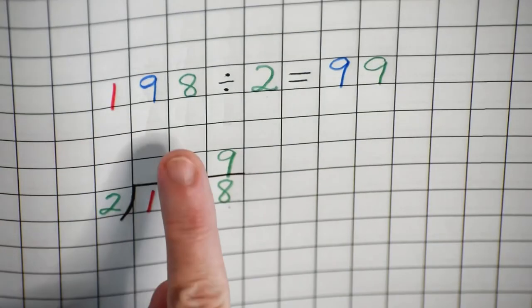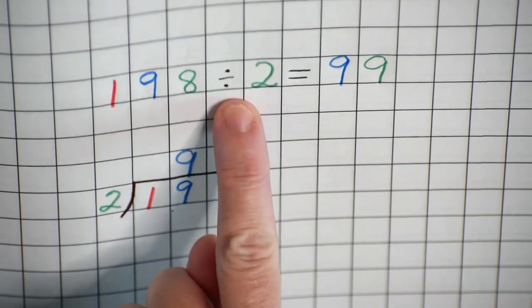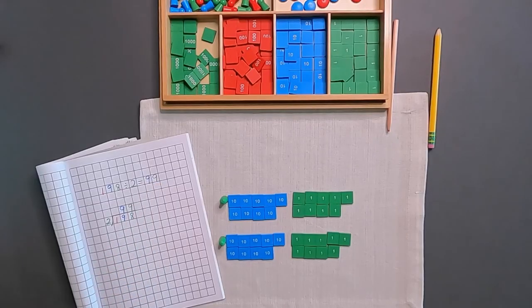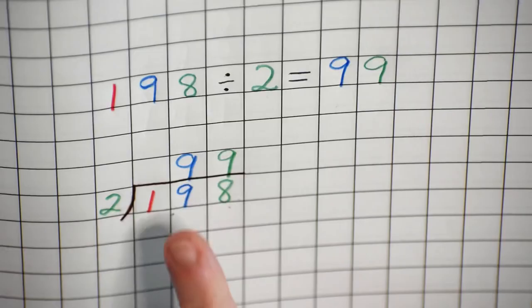So we can say 198 divided by 2 is equal to 99. The answer in division is called the quotient. So the quotient here is 99.